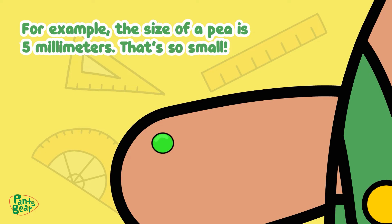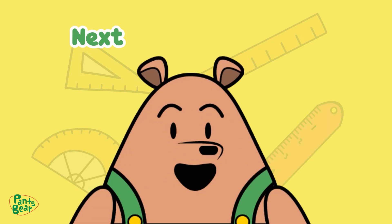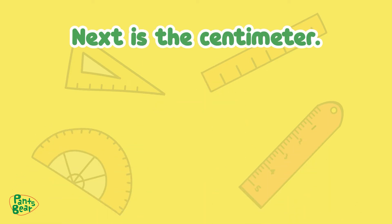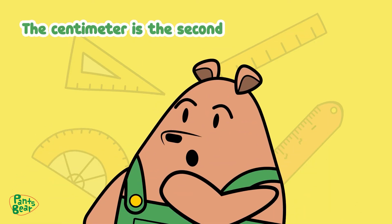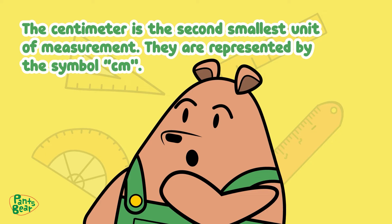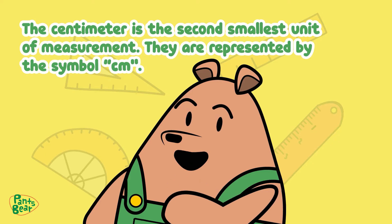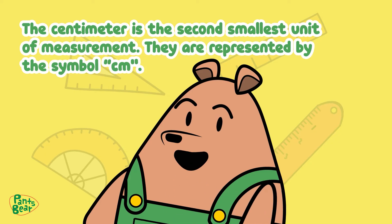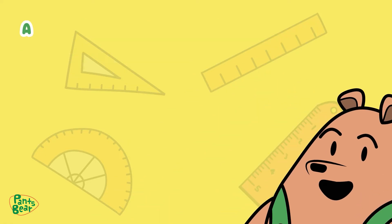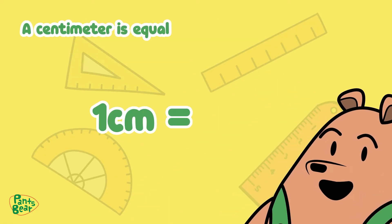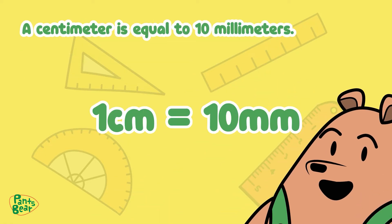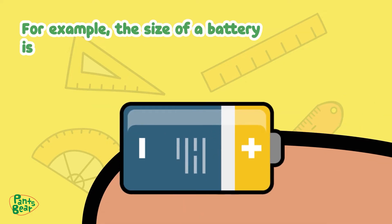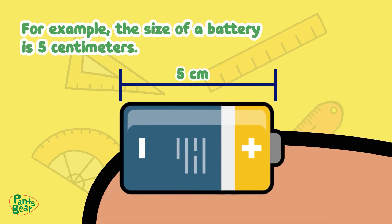That's so small! Next is the centimeter — the second smallest unit of measurement. They are represented by the symbol CM. A centimeter is equal to 10 millimeters. For example, the size of a battery is 5 centimeters.